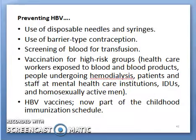Hepatitis B virus can be prevented by using disposable needles and syringes, use of barrier-type contraception, screening of blood for transfusion, and vaccination for high-risk groups. These include healthcare workers exposed to blood and blood products, people undergoing haemodialysis, patients at mental health institutions, injecting drug users, and homosexually active men. Hepatitis B vaccines are now part of the childhood immunization schedule.